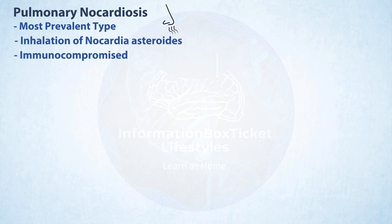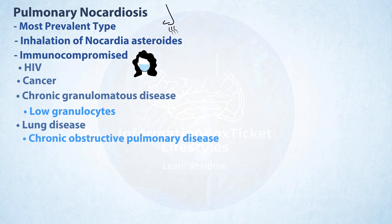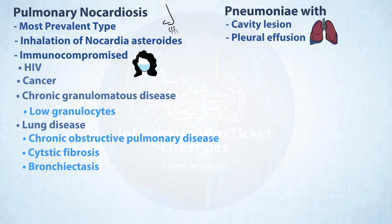Pulmonary nocardiosis can occur in immunocompromised people, such as those with HIV infection, cancer, or chronic granulomatous disease, all of which are associated with low granulocyte counts, or in people with underlying lung disease, such as chronic obstructive pulmonary disease, cystic fibrosis, or bronchiectasis. Pulmonary nocardiosis can progress to pneumonia with cavitary lesions, pleural effusion, or fluid in the pleural cavity, and empyema, which occurs when pus accumulates in the pleural cavity.